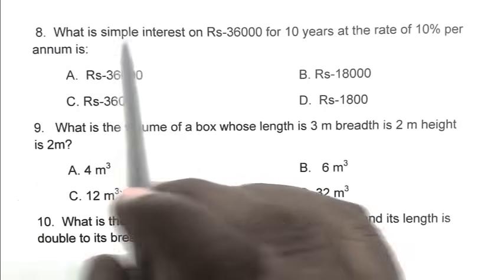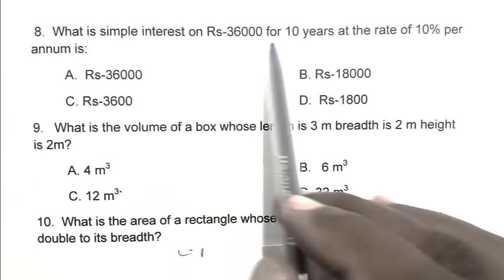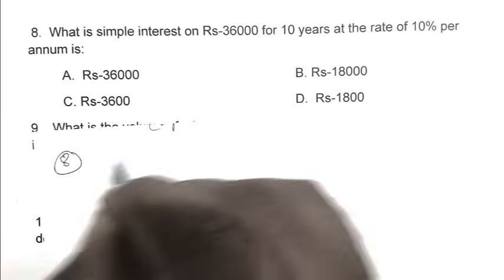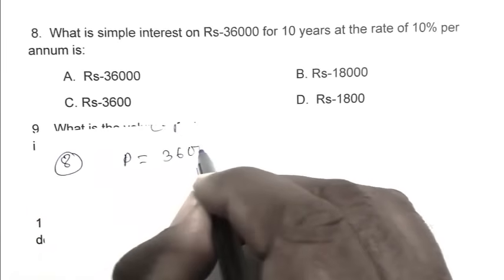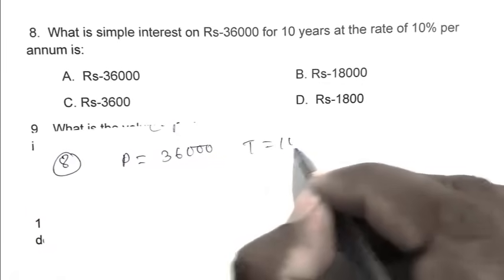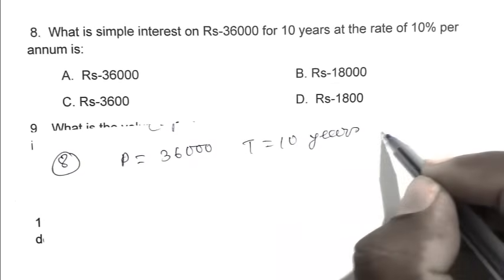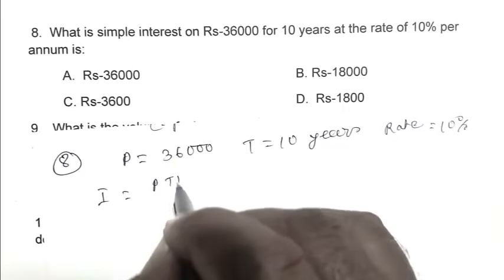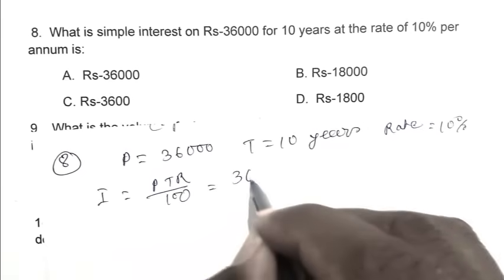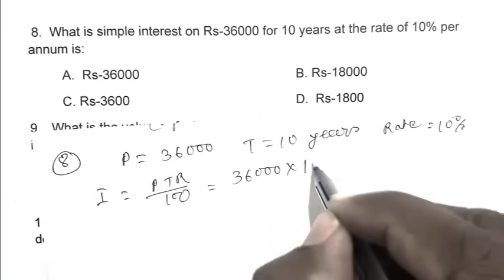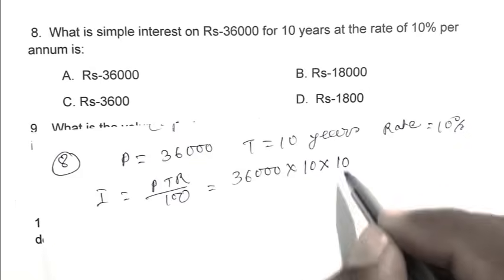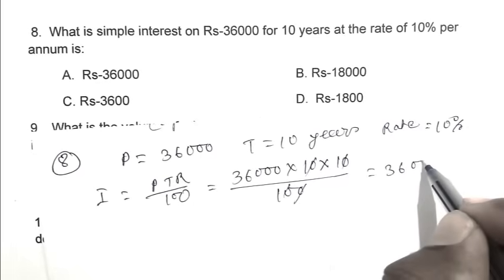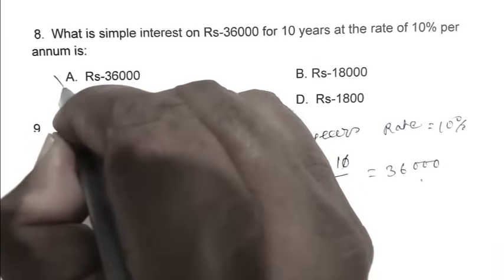Question number eight: what is simple interest on rupees 36000 for 10 year at the rate of 10 percent per annum? Simply we can calculate it from formula: principal that is 36000, time that is 10 years, rate 10 percent, by 100. So 36000 times 10 times 10 by 100 equals 36000. So A is the right answer.